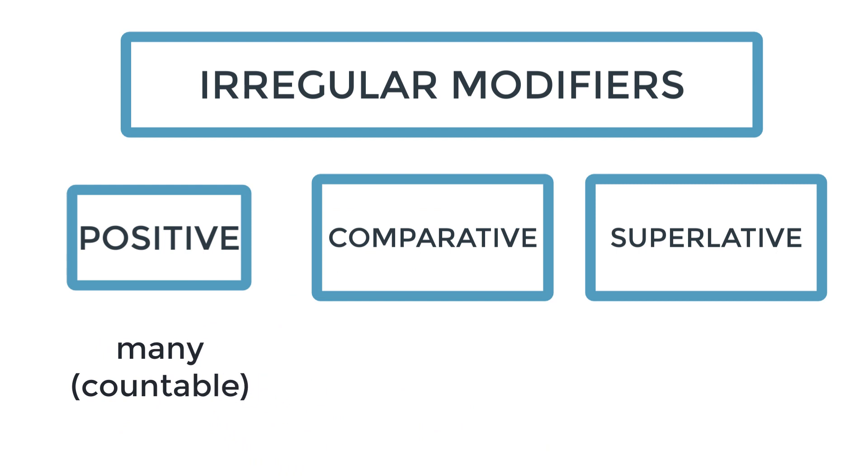Let's go on to the next one. Many. When we use the modifier many, we use it for countable things, for things that we can count. So we would say many, and the comparative is more, and the superlative is most. Many, more, and most. You can see here that we are using the basic adverb more for the comparative and the basic adverb most for the superlative.